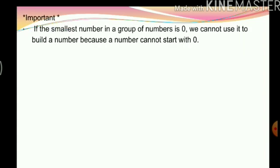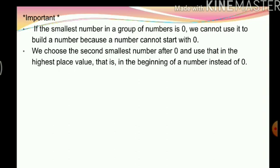Here is an important note. If the smallest number in a group of digits is 0, we cannot use it to start a number because a number cannot begin with 0. When building the smallest number and the smallest digit is 0, repeating 0 in all place values is not a valid number. So instead, we choose the second smallest digit after 0 and use that in the highest place value — at the beginning of the number.